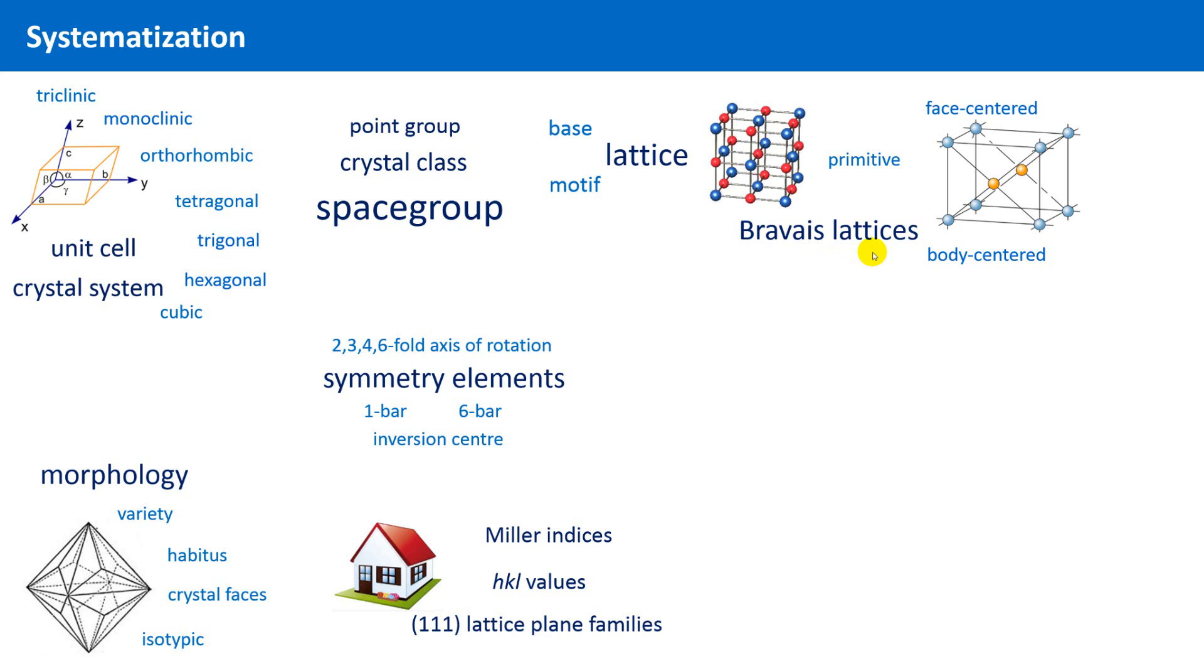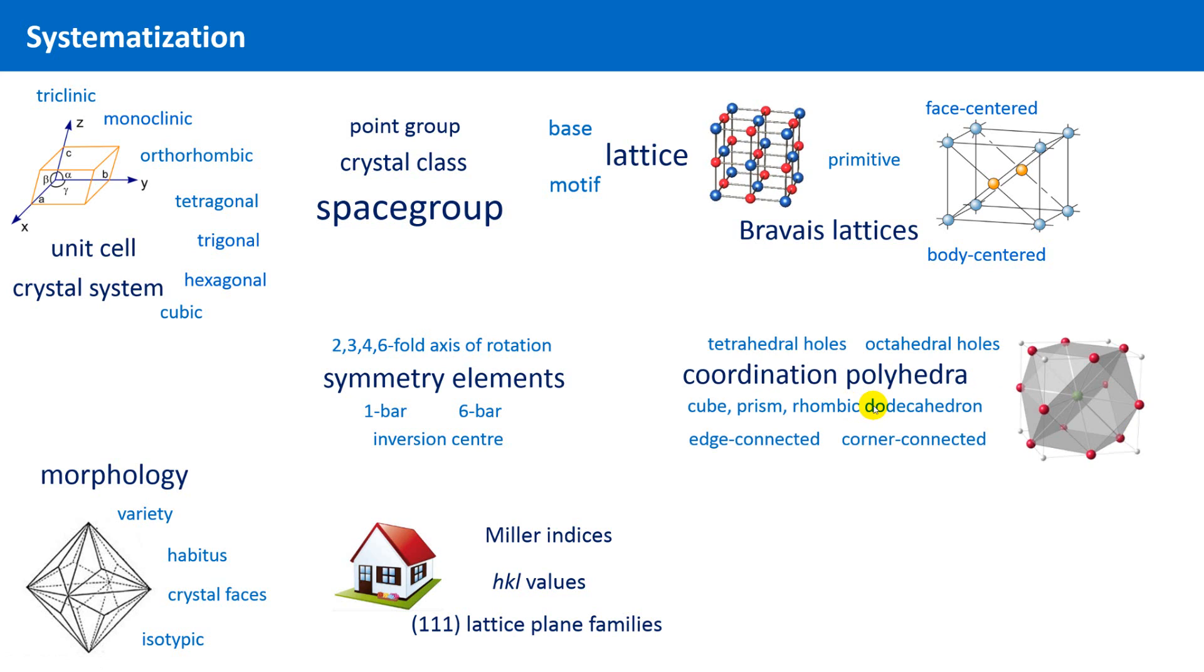To describe solid-state matter, there are two complementing concepts. The first one makes use of the closest packing of spheres, in which other species can be located in the voids of such a packing. The second concept is based on coordination polyhedra.